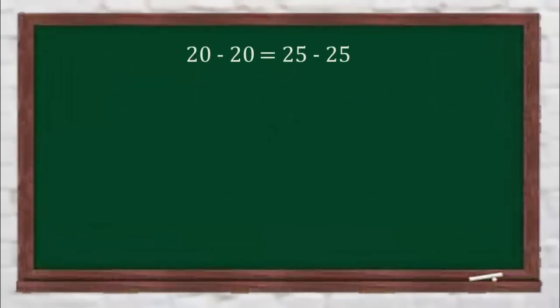I'll start with this simple equation: 20 minus 20 is equal to 25 minus 25, as they both give the same result, 0.